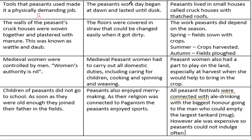Peasants lived in small houses called crook houses with thatched roofs. The fact they had a house might be seen as slightly positive, but these crook houses would have had infestations and wouldn't have been the most comfortable. They would have had to sleep on the floor with straw, and also had to share their house with their animals. The walls of the peasant's crook house were woven together and plastered with manure — this was known as wattle and daub. Even though it may have smelled and hygiene was poor, the manure and woven construction would have been quite highly insulated, so they would have been warm.